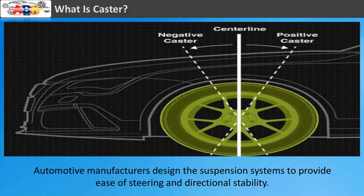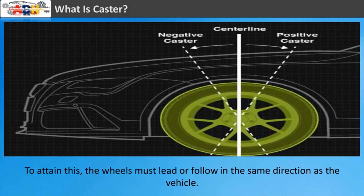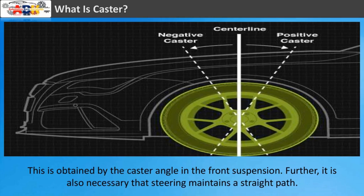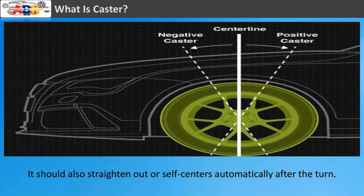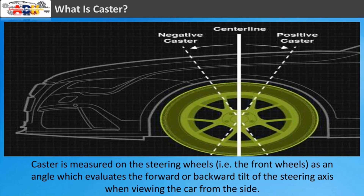What is caster? Automotive manufacturers design suspension systems to provide ease of steering and directional stability. To attain this, the wheels must lead or follow in the same direction as the vehicle — this is obtained by the caster angle in the front suspension. It is also necessary that steering maintains a straight path and straightens out or self-centers automatically after a turn. Caster is measured on the front wheels as an angle which evaluates the forward or backward tilt of the steering axis when viewing the car from the side.